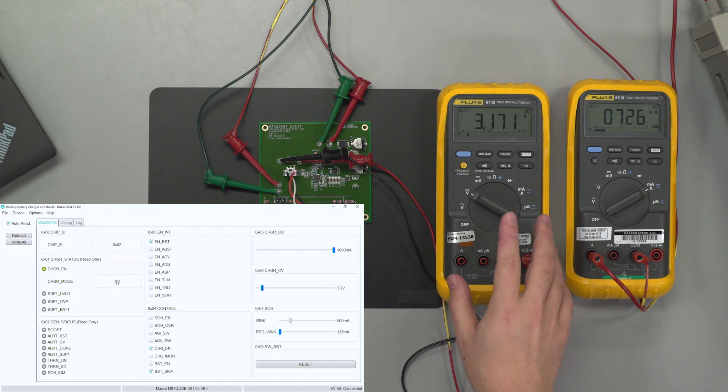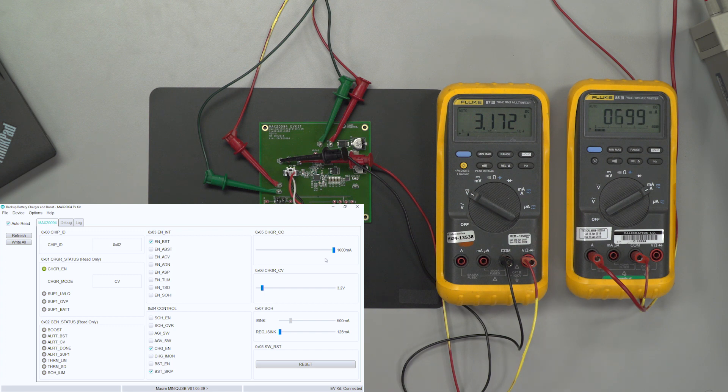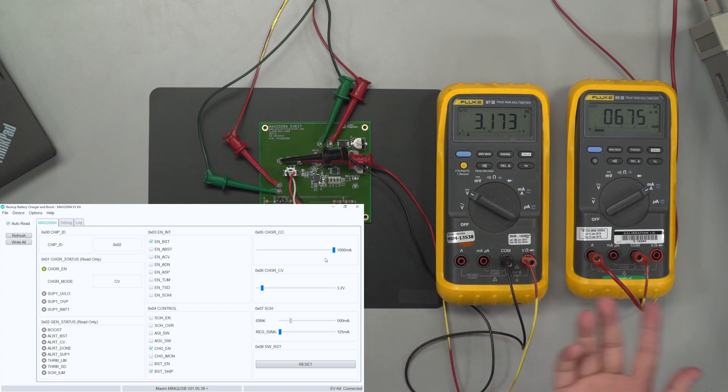Basically what's going on is that even though we set the charge current to 1 amp as we see on the fifth register here, continuous voltage tries to maintain a very precise 3.2 volts so it regulates the current accordingly. So it trickle charges until it finishes charging all the way.